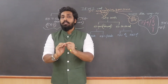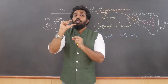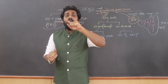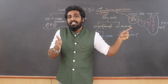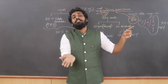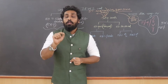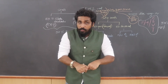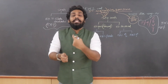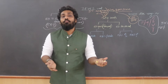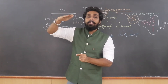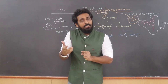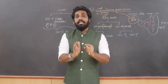The merit list shows your state rank, university rank, and category rank. For example, a state rank of 353 means 352 students are ahead of you. A university rank of 62 means 61 students are ahead in your university. A category rank of 10 means 9 students are ahead in your category. Female candidates also have a separate rank due to their special reservation.